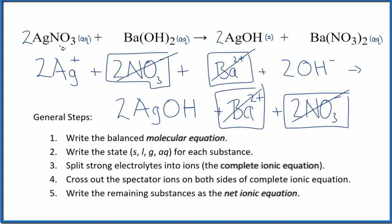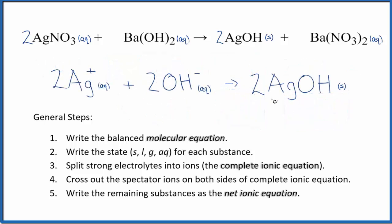What's left is the net ionic equation for AgNO3 plus Ba(OH)2. I'll write the states, clean it up. We'll have our net ionic equation.